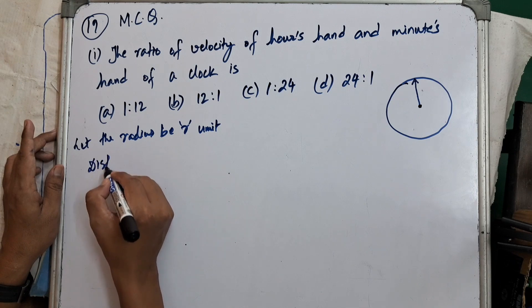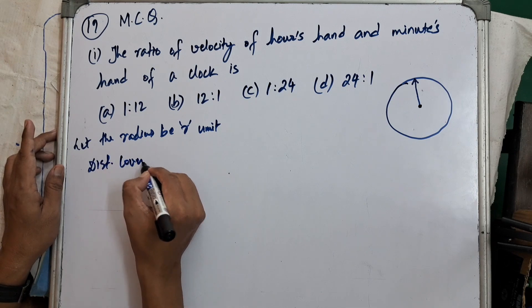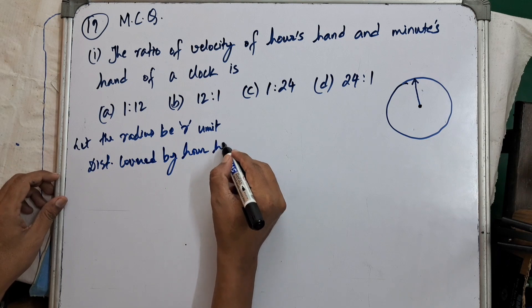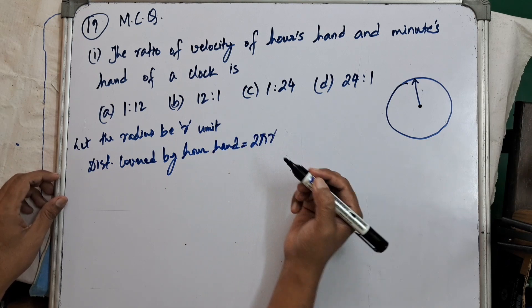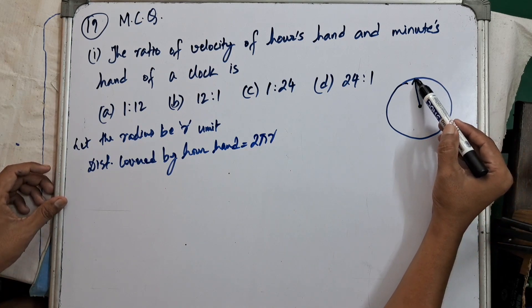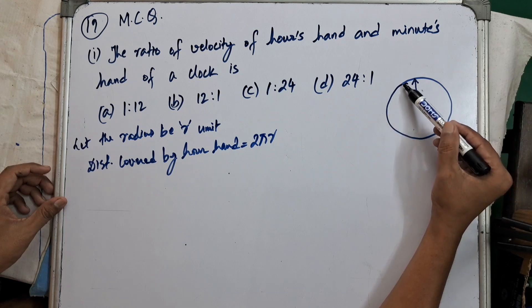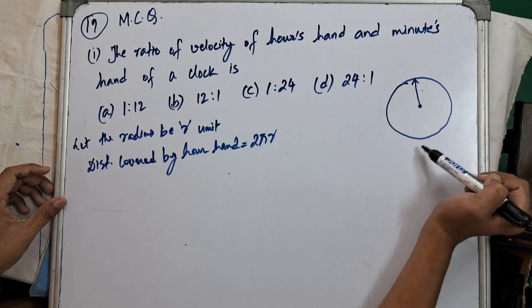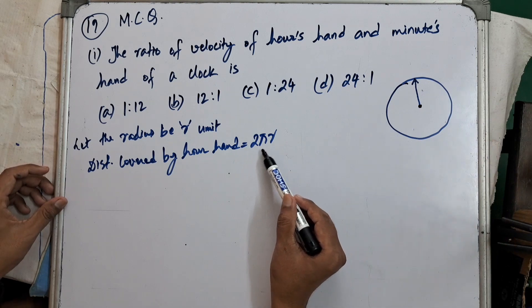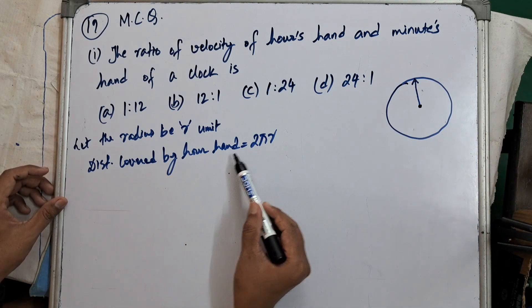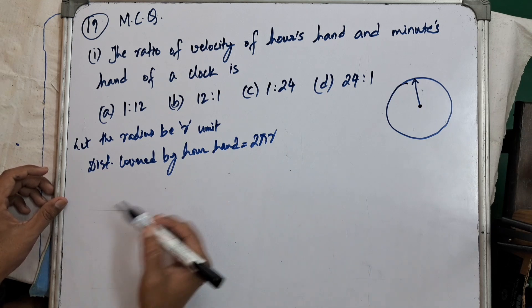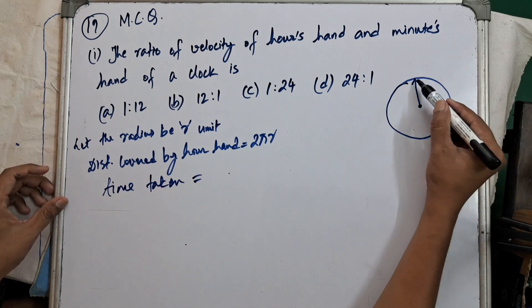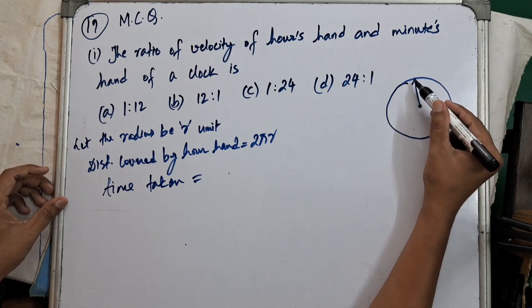Suppose this is the hour hand. When the hour hand completes one revolution and comes back to the same position, the distance travelled by the hour hand will be equal to the circumference of the circle, which is 2πR. Time taken by the hour hand to complete one revolution is 12 hours.